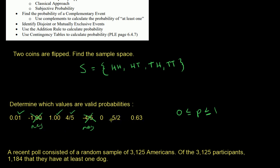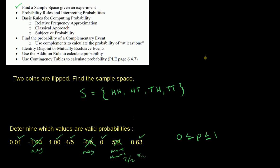0 is a valid probability because probabilities are greater than or equal to 0. 5/2 is not valid because 5/2 is more than 1 — remember, 2/2 would be 1, so anything more than that exceeds 1. And 0.63 is good again. So those are the basic rules for probability and interpreting probabilities.